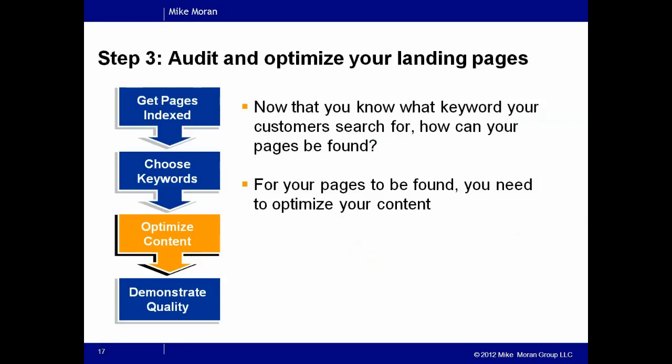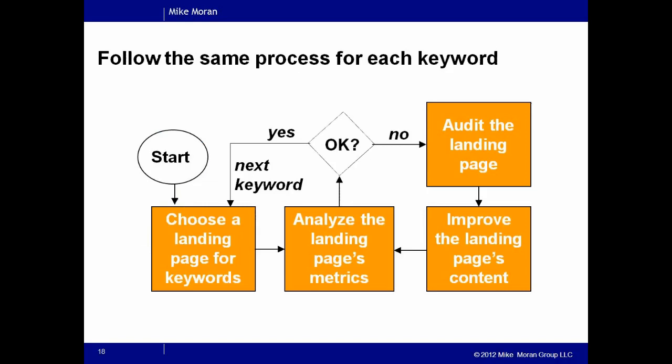The third step is to audit and optimize your landing pages. The landing page is the page that the search engine brings up when someone types in a keyword — when someone clicks on that search result, they are landing on your site. What you're trying to do is make sure that pages from your site become the search landing pages when people search for the keywords you're targeting. Once you understand what keywords you want people to find, you have the opportunity to optimize your landing pages. This process doesn't cost you any money — it costs time, but you don't have to pay for anything.